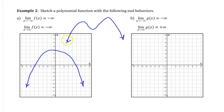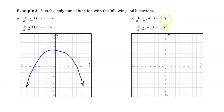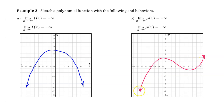Anything that goes down on the left and the right works. For part b, the limit as x approaches negative infinity of g of x is negative infinity, so on the left it falls. The limit as x approaches positive infinity of g of x is positive infinity, so on the right it rises. Here's a simple function with that end behavior: falls on the left, rises on the right.